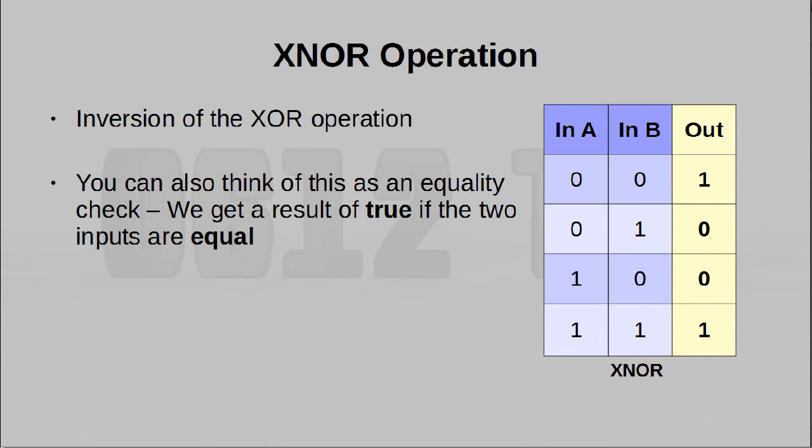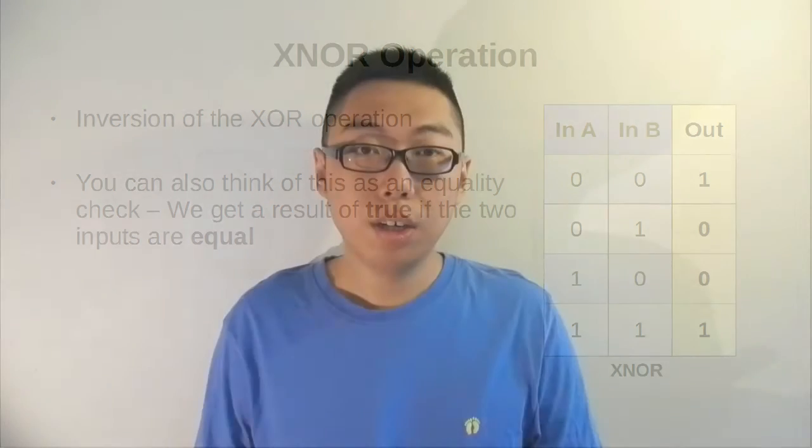XNOR is just an inversion of XOR. So yeah, same idea, perform an XOR operation, and then do a NOT on the result. Using these operations will allow you to combine the results of all these different decisions into one final result that takes everything into account.